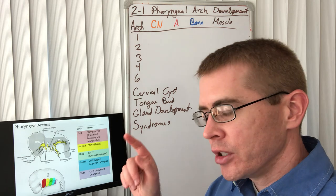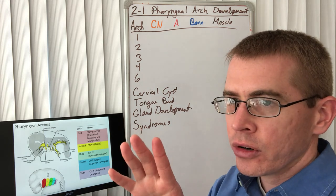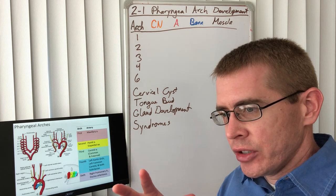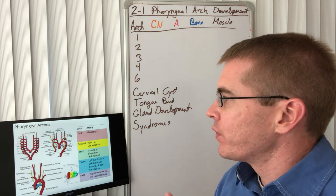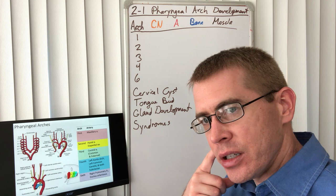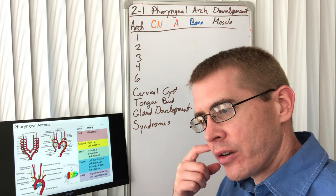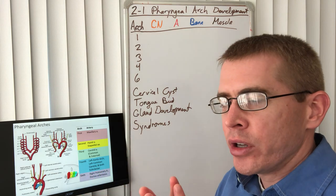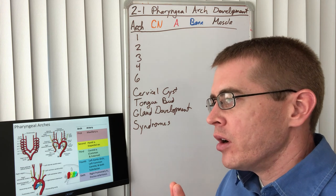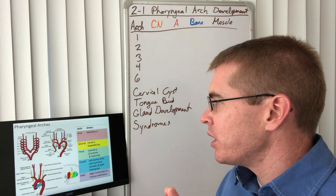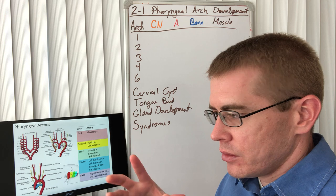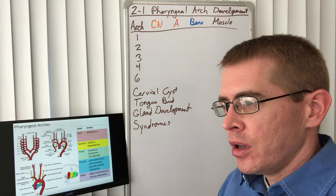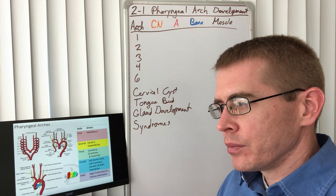We have glossopharyngeal in the third, and in the fourth and sixth arches we have portions of vagus nerve. So the superior laryngeal portion of vagus nerve from the fourth and the recurrent laryngeal nerve from the sixth. The arteries that supply these different regions also form inside these arches.